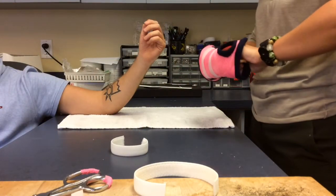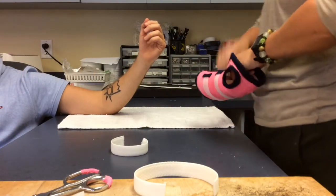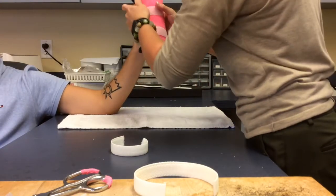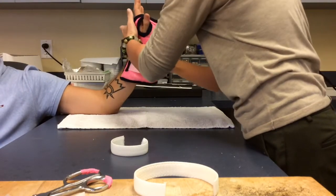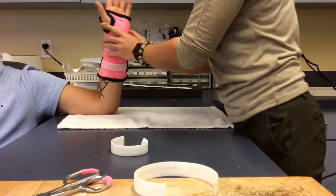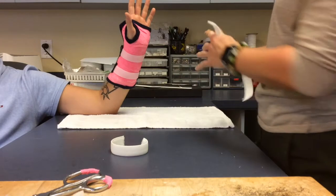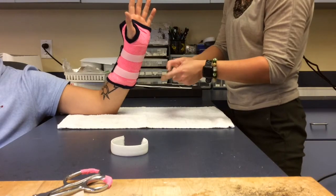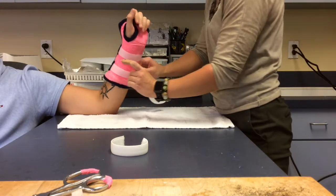Once you are done anchoring the velcro, you can apply your straps and cut them appropriately to fit the patient. You can put the cast on the patient and then measure the soft straps around and connect it to the velcro.